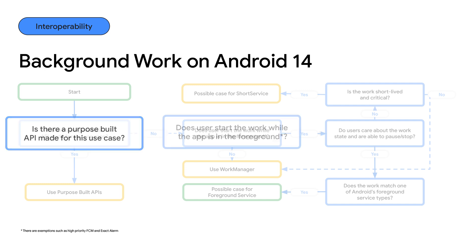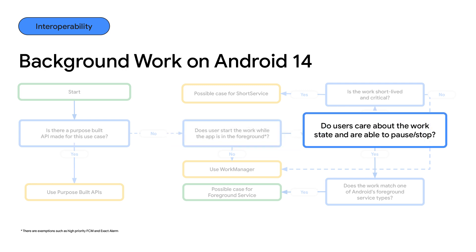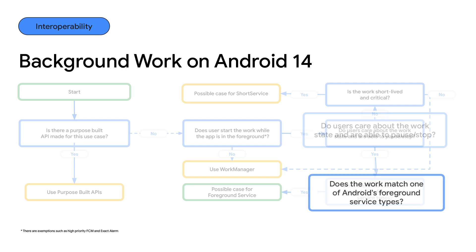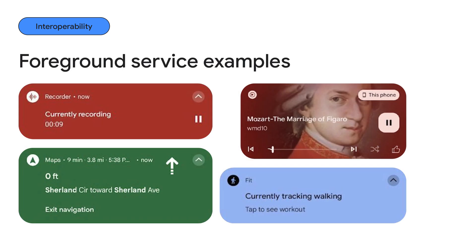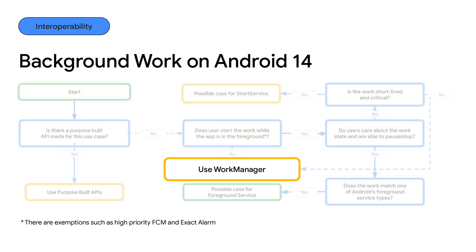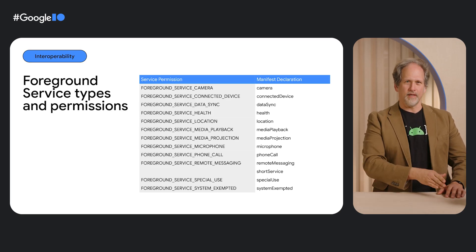More on this later. Then, if the user initiates the work in the app's UI, is likely to care about what's happening, can control whether the work continues, and the work matches one of Android's service types, you just might want to use a foreground service. Examples include navigation, media playback, audio recording, or workout tracking. Otherwise, most of the time, use WorkManager. Here are the foreground service types known to Android 14.